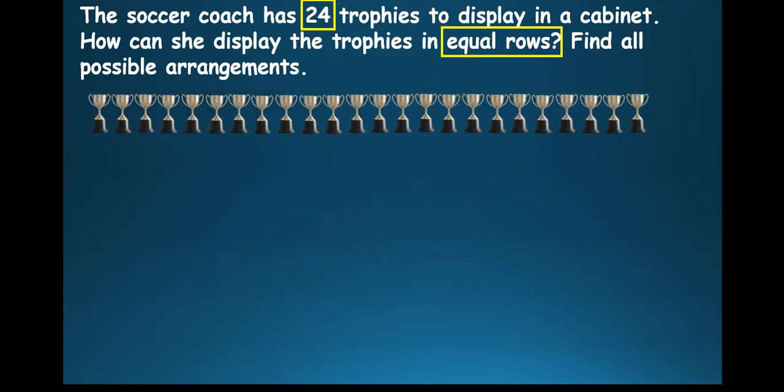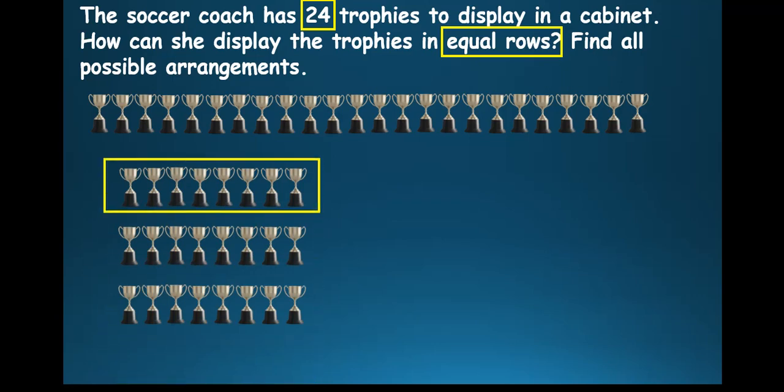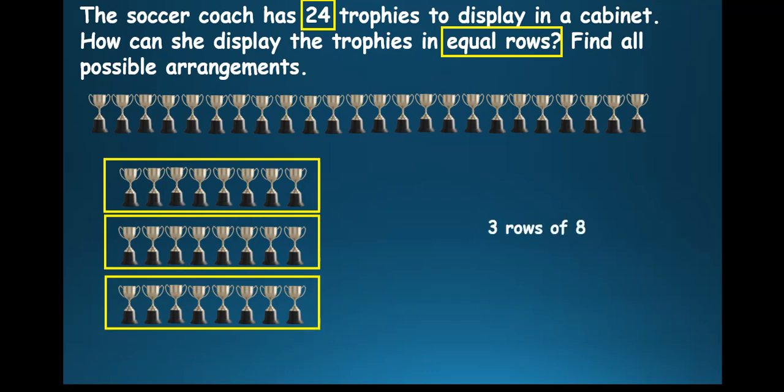Let's look at another way. We still have the 24 trophies. And this time around, we split it into equal rows. And if you see, this is row 1. If you count it, that is 8 trophies. Row 2, 8 trophies. Row 3, 8 trophies. That means there are 3 rows of 8. 3 times 8 will still give you 24.